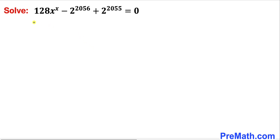Welcome to pre-math. In this video we are going to solve this given equation: 128 times x power x minus 2 power 2056 plus 2 power 2055 equals to 0.